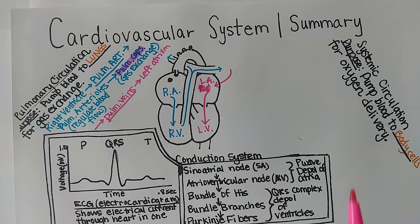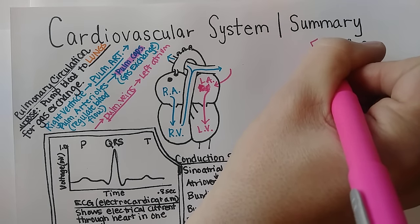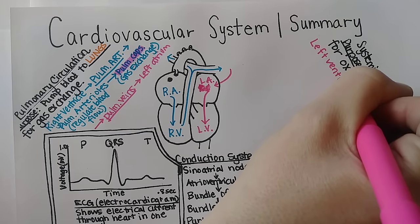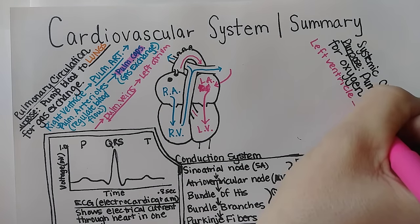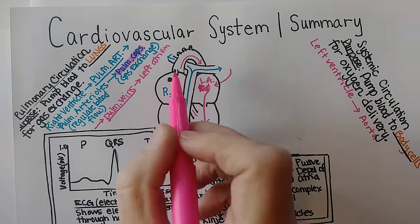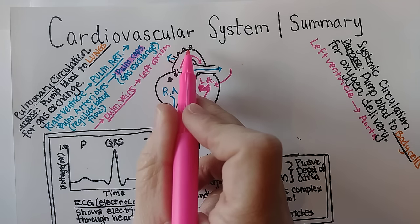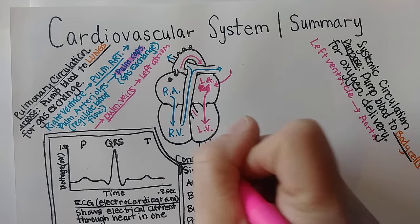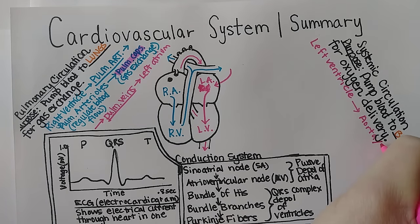Oxygenated blood flows from the left atrium through the bicuspid valve into the left ventricle, beginning the systemic circulation. The left ventricle pumps blood up and out through the aorta — the largest artery in the body. The first branches off the aorta are the coronary arteries, giving the heart first access to oxygenated blood. Three vessels off the top of the arch supply the upper body, and further down the abdominal aorta delivers blood to organs such as the kidneys.